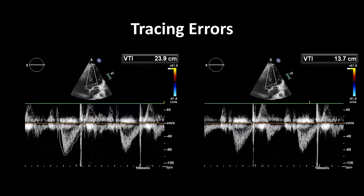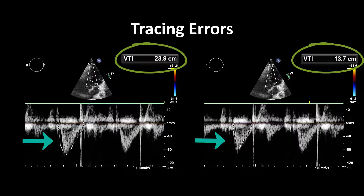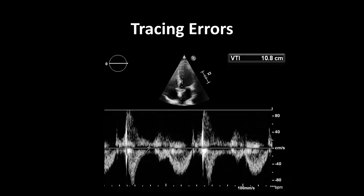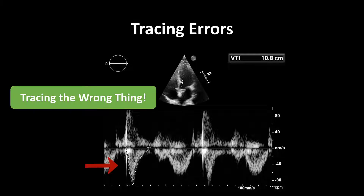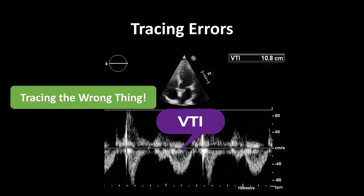Another common issue is tracing errors. Here's an example where the VTI is acquired really well, but on the left-hand side the VTI envelope has been over-traced and on the right-hand side it's been under-traced. The exact same VTI sample gives you such a different result depending on how you trace it, so take your time and trace it accurately. Also make sure you're tracing the correct flow — blood flow happening in diastole, identifiable by mitral inflow, should not be traced. You can use ECG leads to determine the phases of the cardiac cycle to ensure you're tracing the VTI envelope seen in systole.